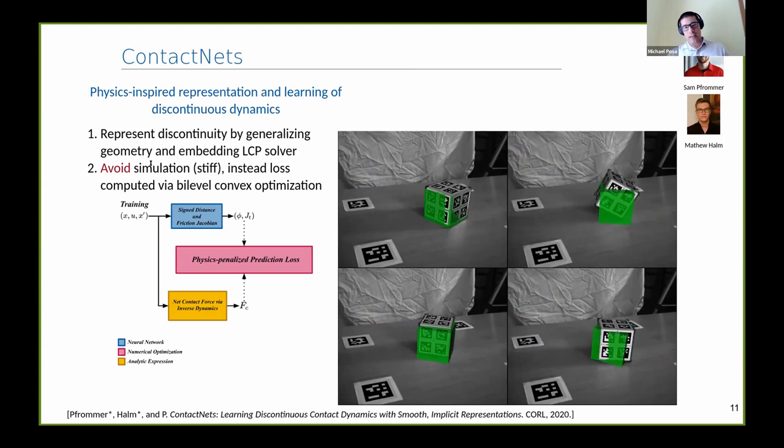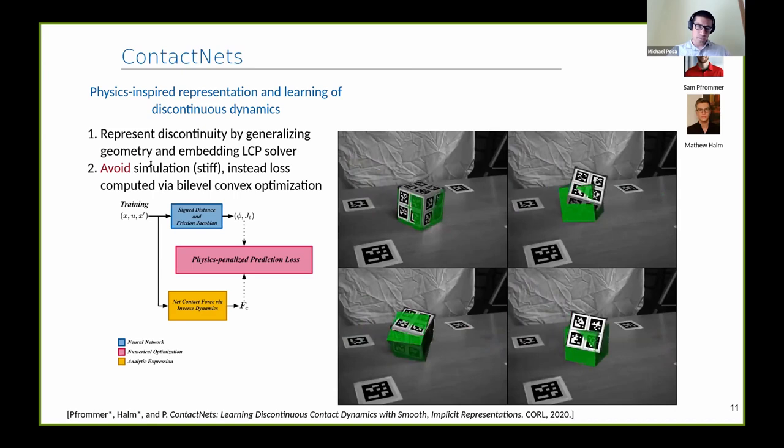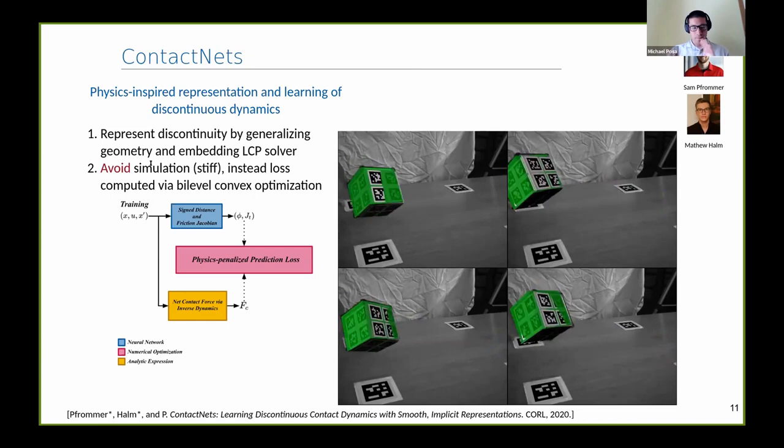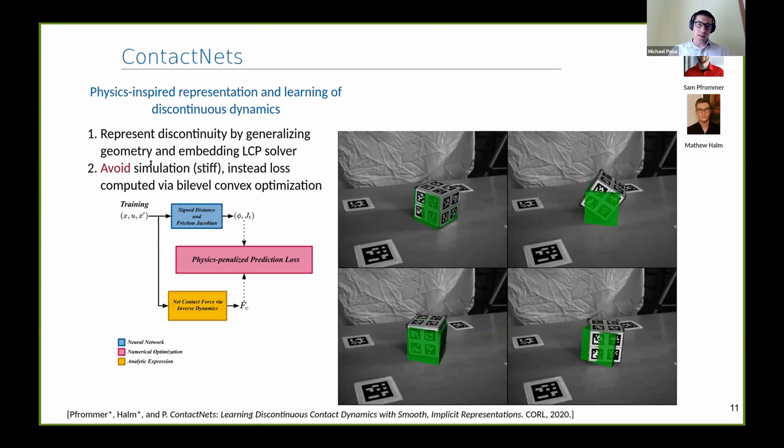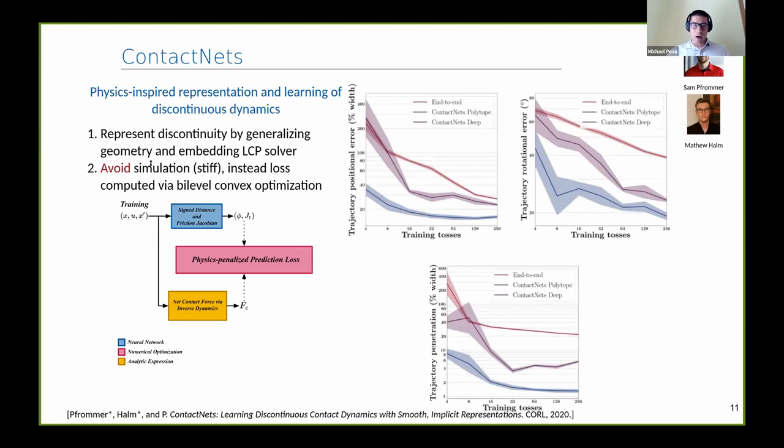The second thing we're going to do is we're actually not going to ever simulate. We're never going to take our model and roll it out, because if we take our very stiff or discontinuous model and roll it out, we get back to our original problem of poor behavior or dependency on stiffness. Instead, we're going to pose a bi-level optimization problem. In this case, a bi-level convex optimization problem to compute our loss. This gives us a really nice way of saying: if I have a model, how does that model explain my data when my data includes things like bouncing and sliding? The net result is much more natural-like predictive motion.